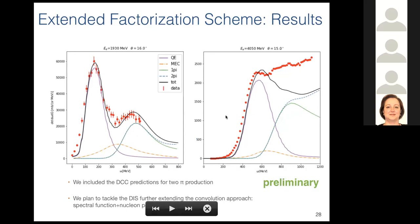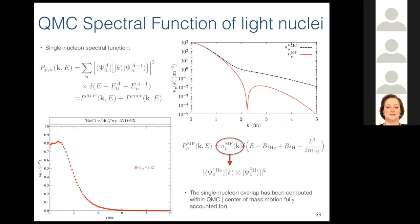As a plan for the future, we intend to include the deep inelastic scattering part, to connect the transition phase between two-pion emission and the onset of DIS. The CBF spectral function is a semi-phenomenological one.